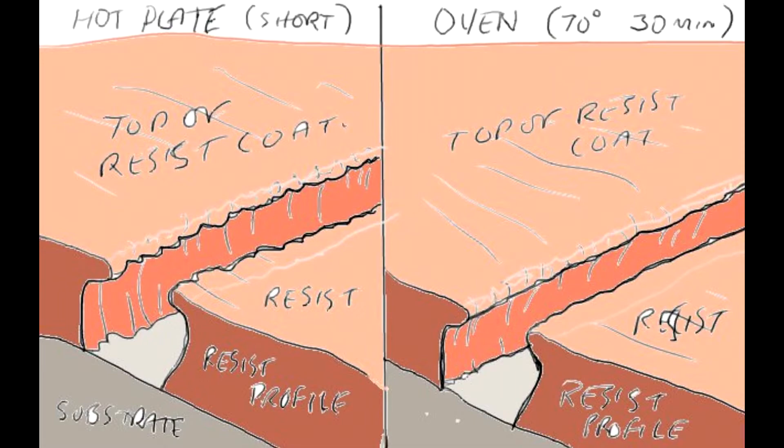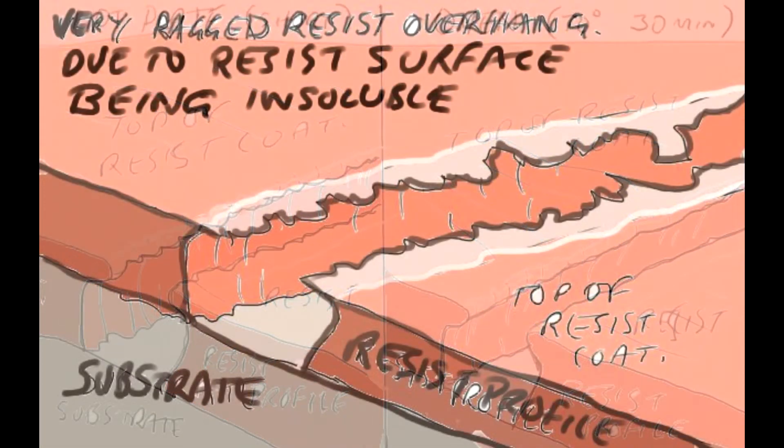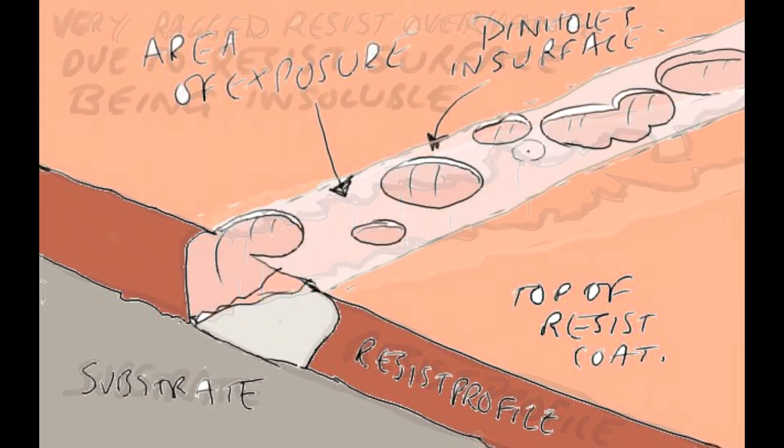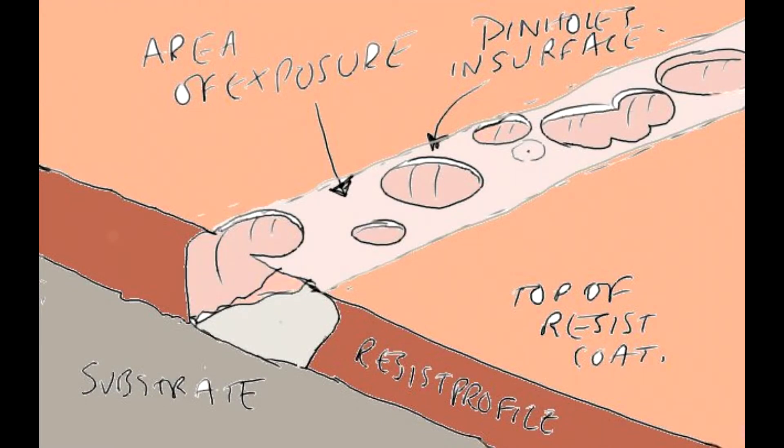Sometimes the chlorobenzene goes completely wrong, and instead of forming a nice profile, the top of the resist becomes completely insoluble. And so you get an absolutely horrible looking overhang, and sometimes it takes a long time to develop this out. So it's a really horrible looking overhang. The chlorobenzene process has basically failed. The reason it does develop out at all is because the developer tends to get through pinholes in the surface. So the developer gets through in a pinhole, it develops out the exposed resist underneath the pinholes, and gradually if you leave it in long enough it will form a sort of profile, but it's that horrible raggedy profile that I showed you in the previous slide.